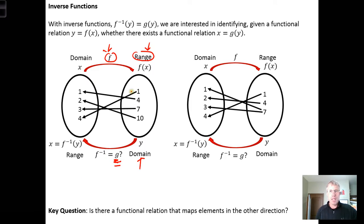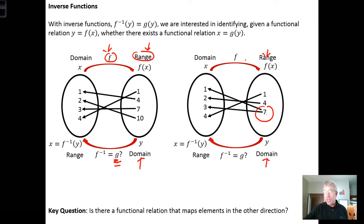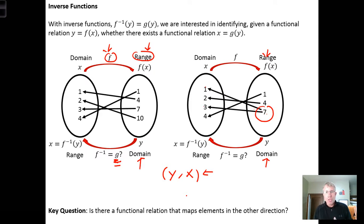We're swapping the X and Y values. For this other mapping over here, when we reverse the direction, what we identify is that yes, it's a relation, but it's not a functional relation — it's not a function. The old output of 7, if we try to make it the new input, maps to two different numbers: 1 and 3. So in this case there is an inverse relation, but it's not an inverse function. An inverse function is simply the relation that takes the Y values as inputs and maps them back to the original X values — reversing the direction of the mapping.